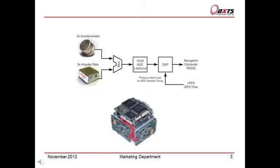Now let's look at the RT inertial measurement unit. In the inertial measurement unit, the accelerometers and angular rate sensors have signal conditioning applied. The outputs are sampled by a 16-bit ADC at 2.5 kHz per channel. The DSP performs further processing of the data, including coning and sculling motion compensation.